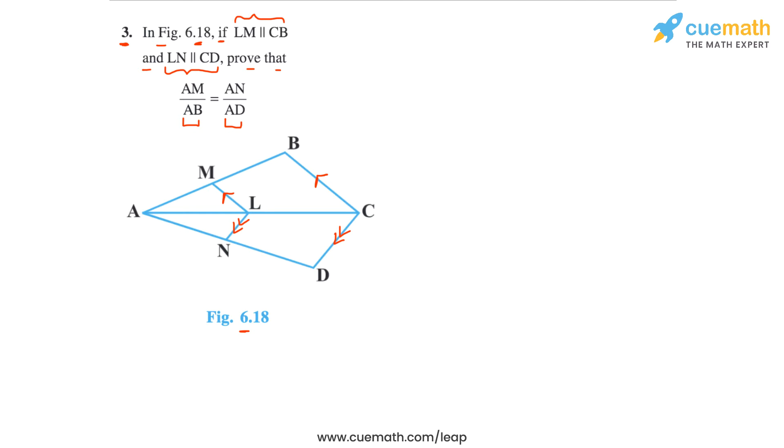So this is what we have to prove, and here's the reasoning we will use to solve this problem. First, we will apply the basic proportionality theorem to triangle ABC, since LM is parallel to CB, and we will obtain AM by the whole segment AB equal to AL by the whole segment AC.